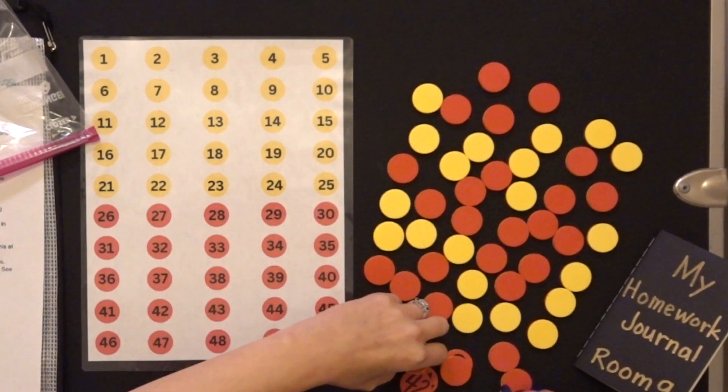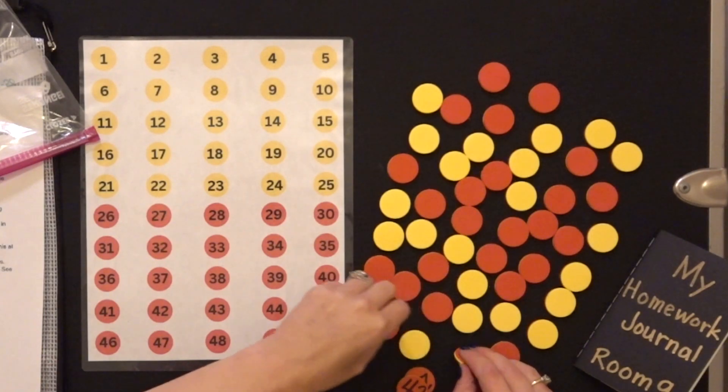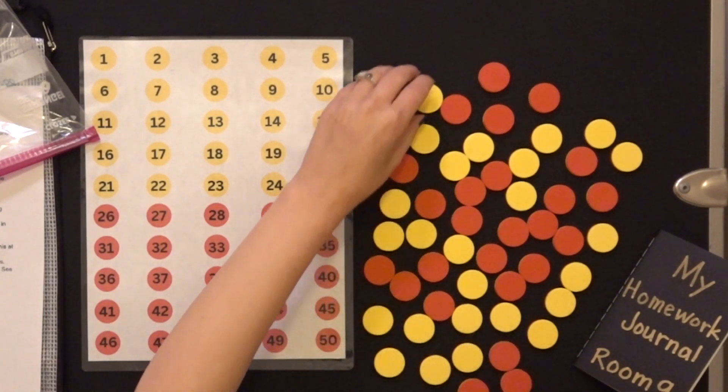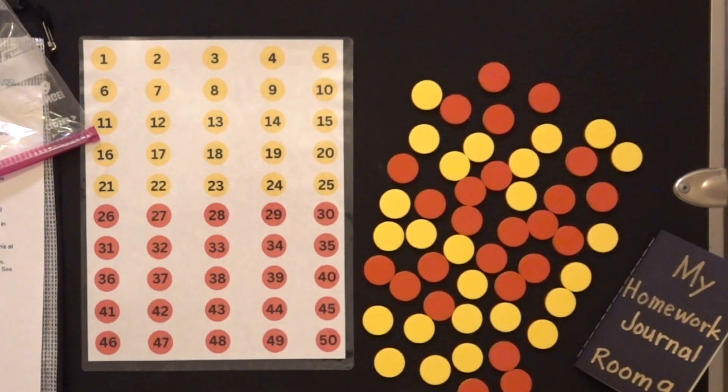All right, so see I can't see a single number right now. So what you're going to do is you're going to choose one yellow one, and one red one.